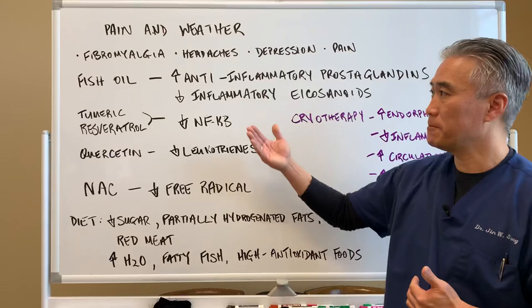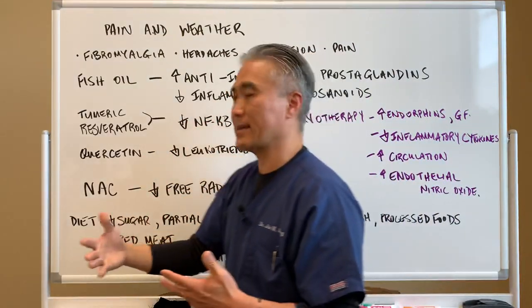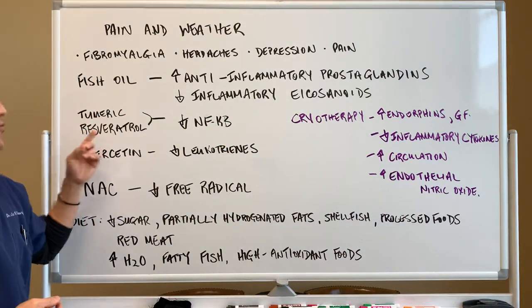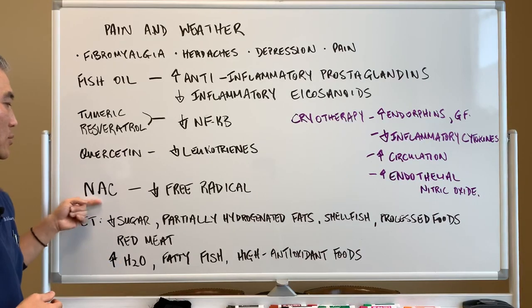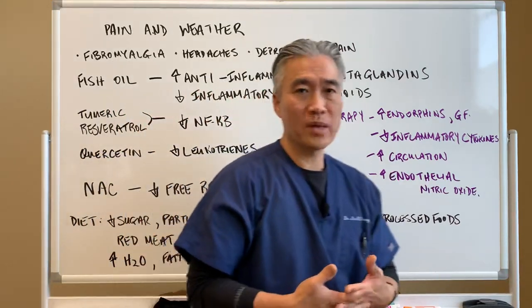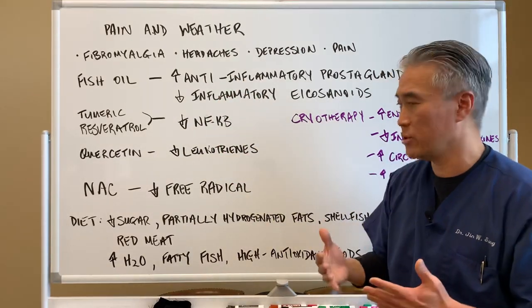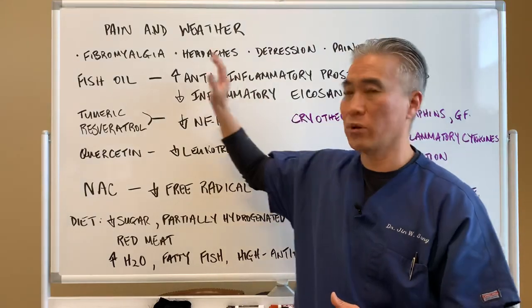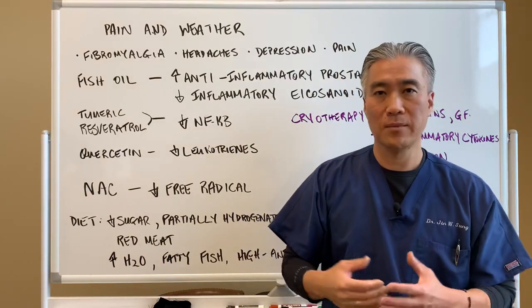After exercise, we can take supplements like fish oil. Fish oil will decrease anti-inflammatory prostaglandins and eicosanoids. Turmeric and resveratrol will decrease NF-kappa B. Quercetin will decrease leukotrienes. NAC or N-acetylcysteine will decrease free radicals and oxidation. I've actually made a video on each one of these — I'll link them in the description below with specific recommendations about dosage. These are anti-inflammatory and antioxidants that will help the acute inflammatory phases of joint pain.